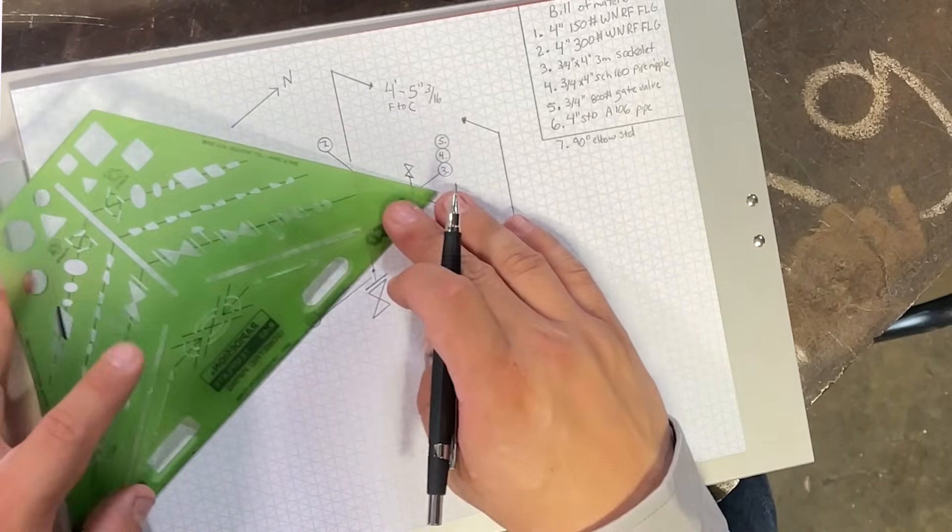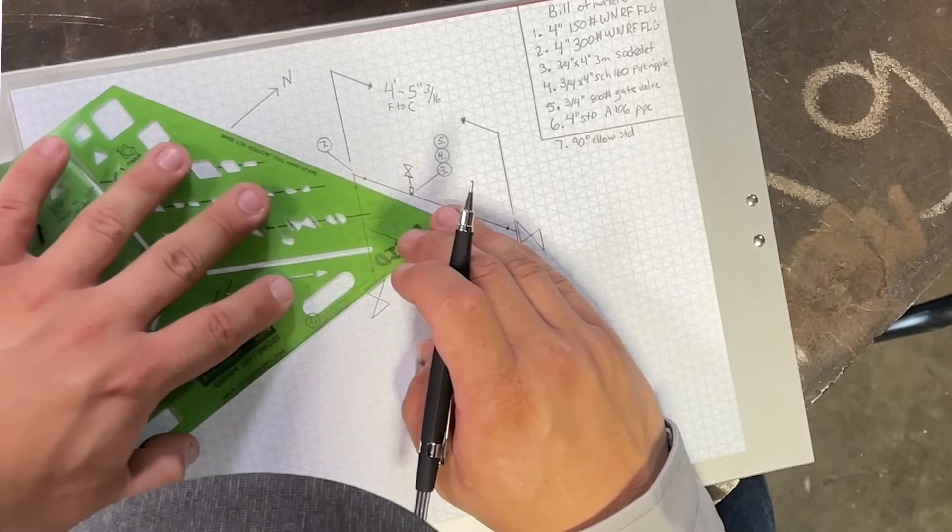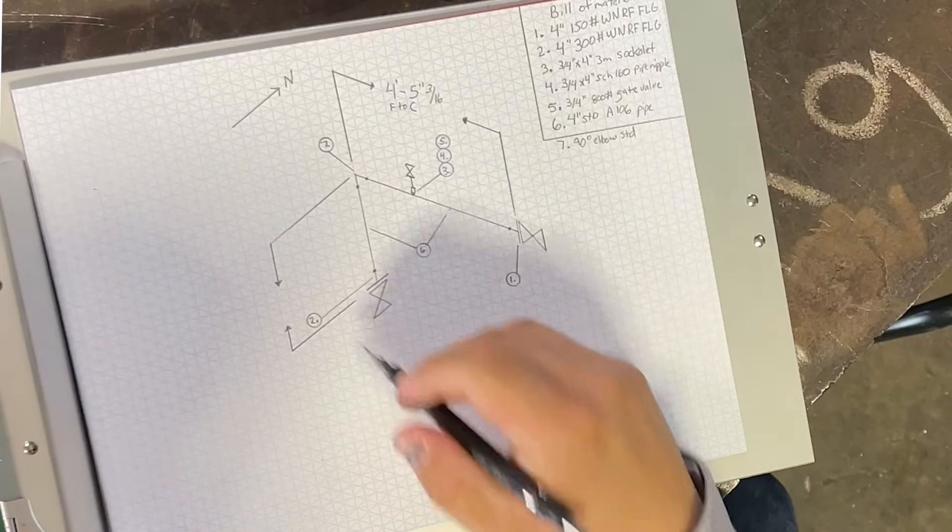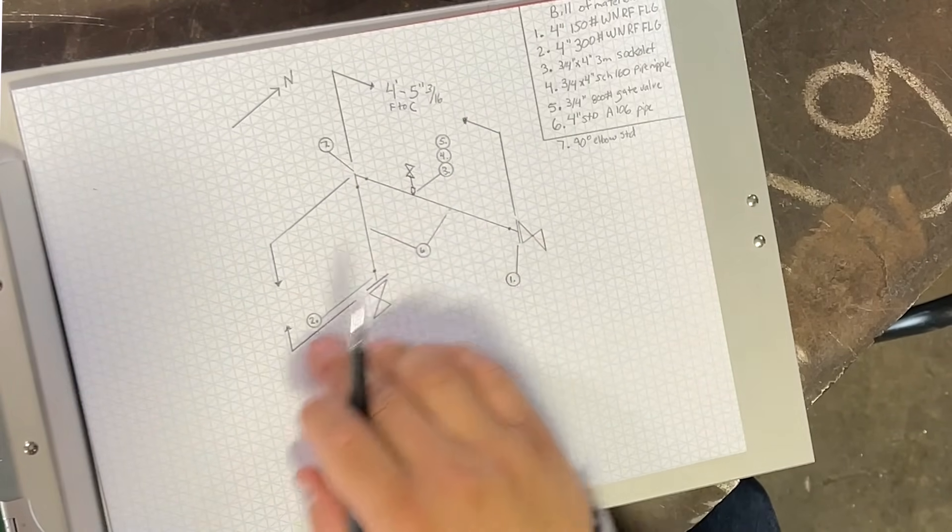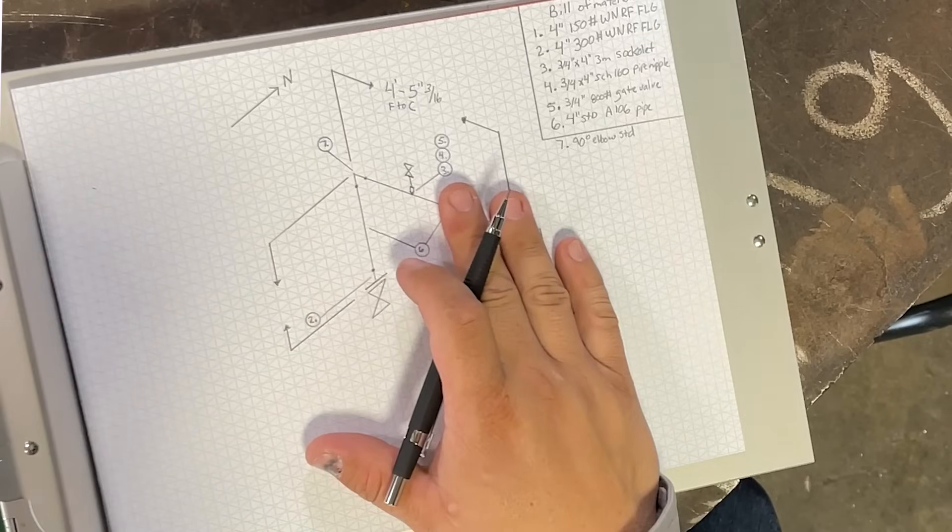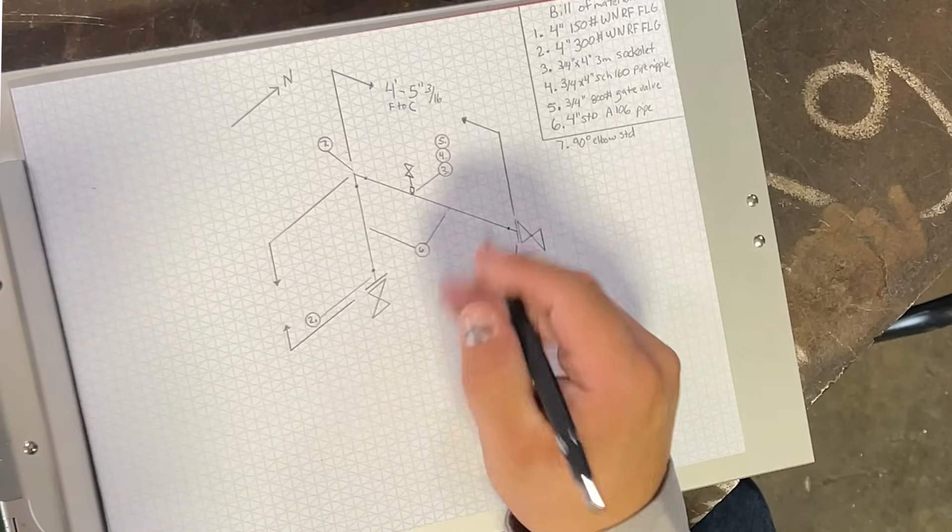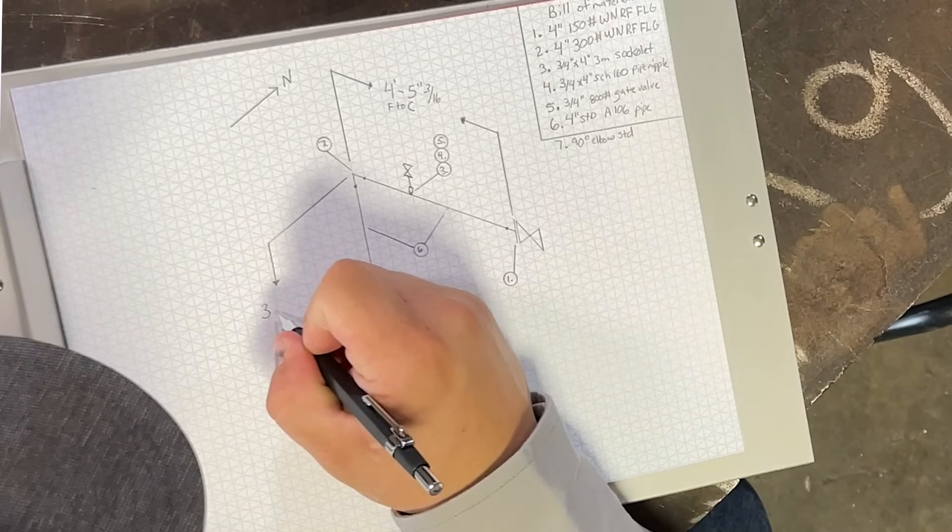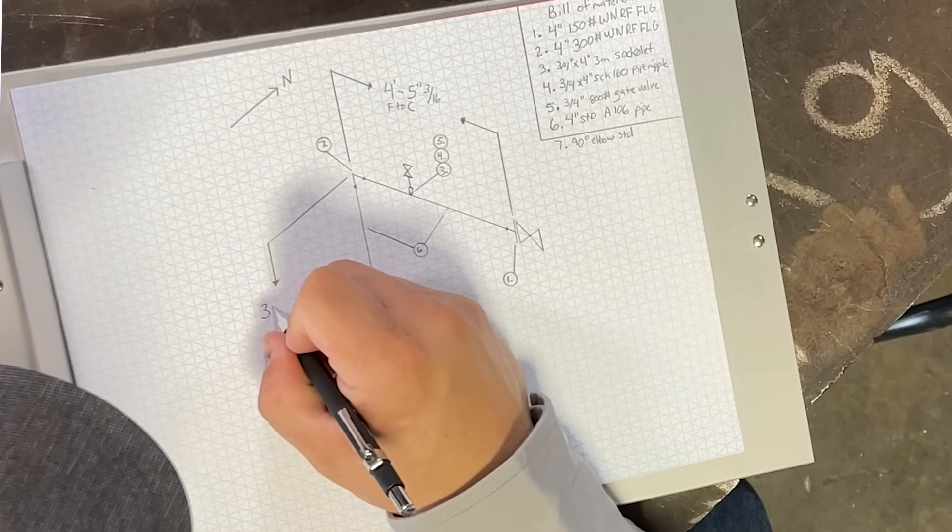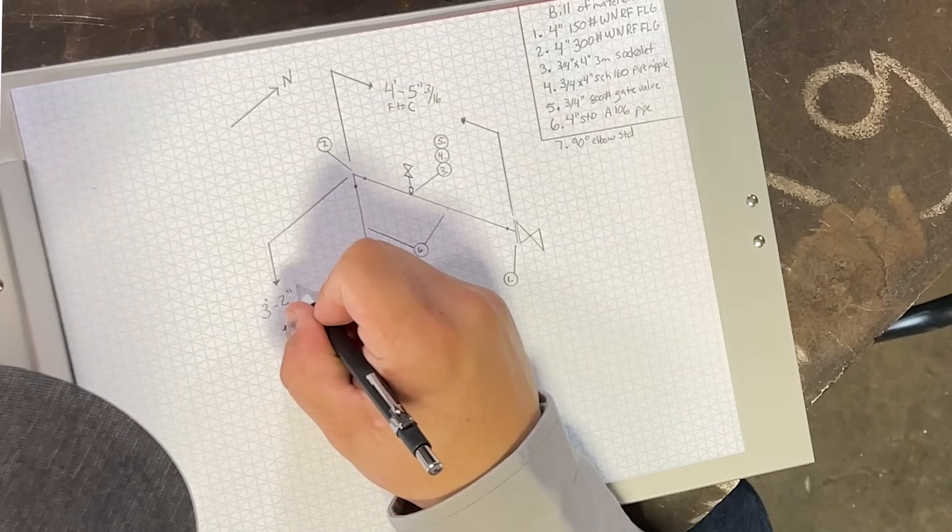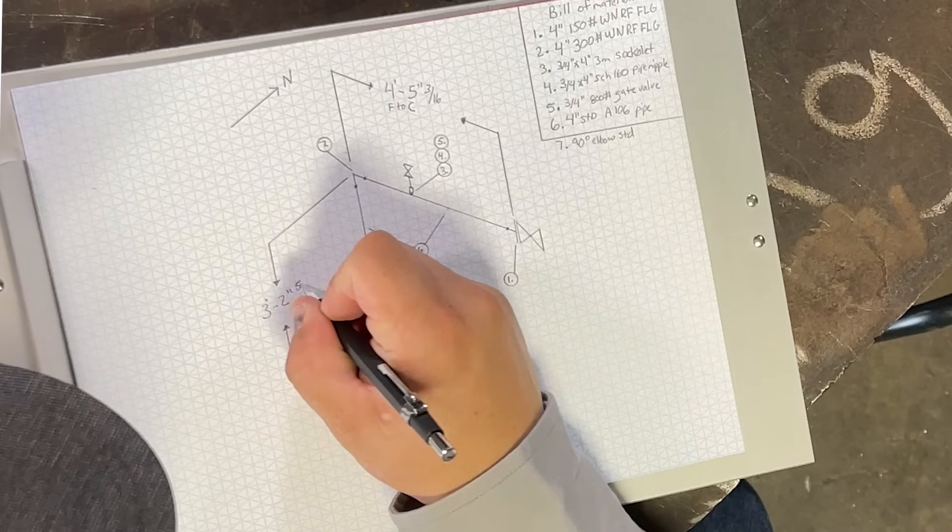And we're going to go ahead and do the same thing here for this side. Okay, also pointing arrows. And if you notice, I'd like to follow exactly our blue lines just to keep our drawing very clean, very neat. And here we're going to say this is three foot, two inch, and five eighths.